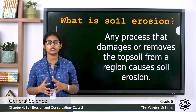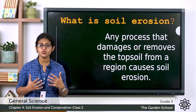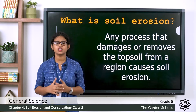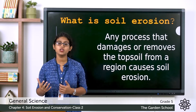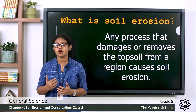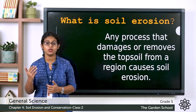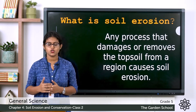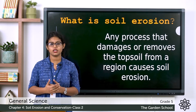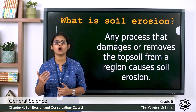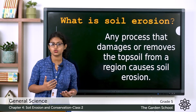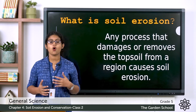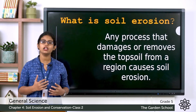So what is soil erosion? Soil erosion is a process by which the top soil gets washed away or blown away. We learned in the last class that the top soil is the topmost or outermost layer of the soil. When this top soil gets washed away or blown away, we call it soil erosion.